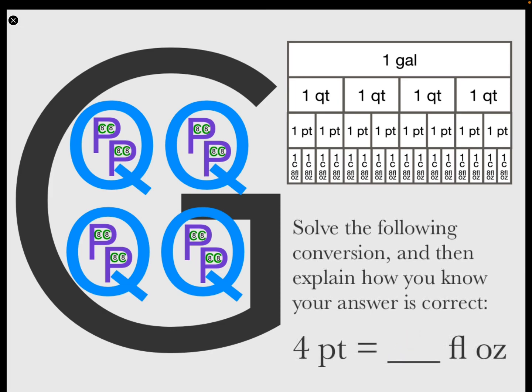Four pints equals how many fluid ounces? Four pints equals 64 fluid ounces.